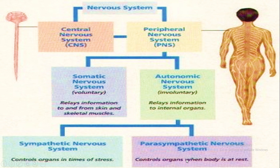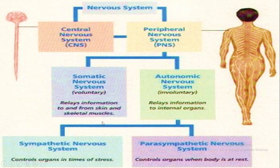The Parasympathetic Nervous System controls organs in the body at rest. It handles digestion, excretion, and similar functions. The Autonomic Nervous System is made up of the Sympathetic and Parasympathetic Nervous Systems.